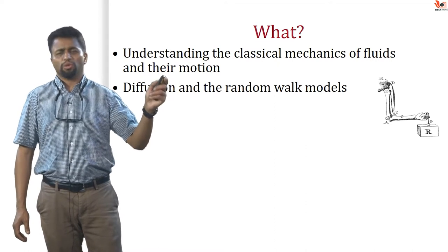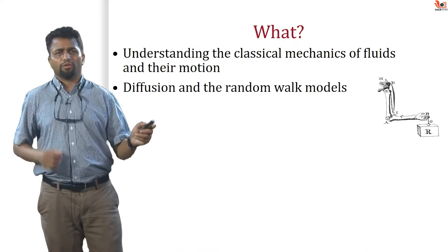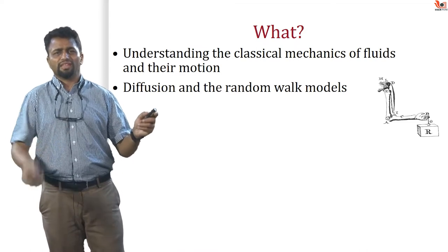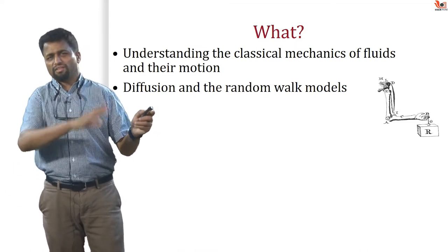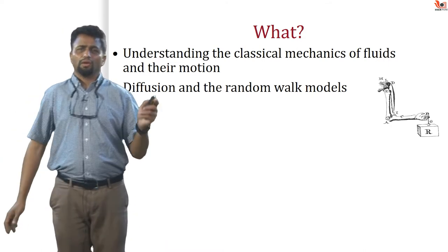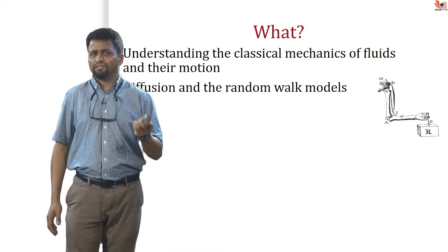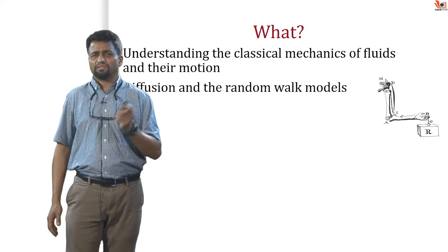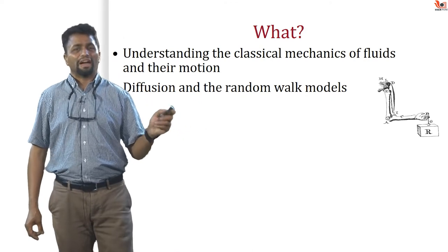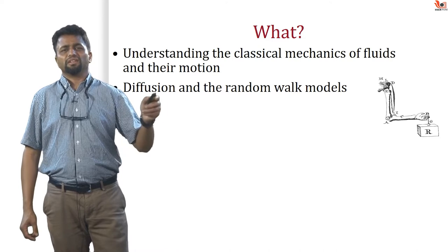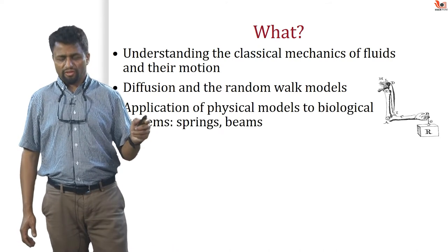Many of you have heard in the molecular biology context about something called recruitment, or how a signaling system can produce a signal from one place and it gets transmitted through the cell. Diffusion is the driving force. We will discuss some of the details, the maths, the physics of it, and also something called the random walk model, because that is key to understanding a lot of these statistical processes.